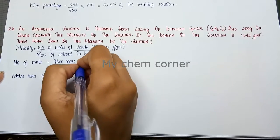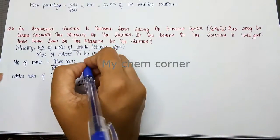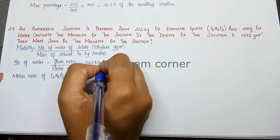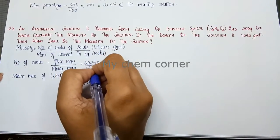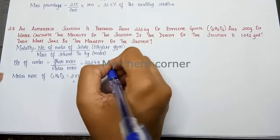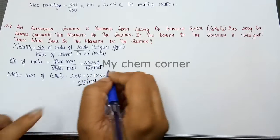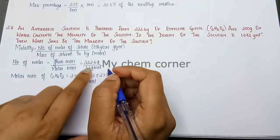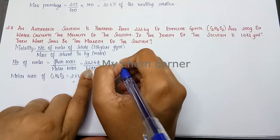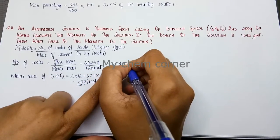Substituting into the moles formula: given mass is 222.6 grams divided by molar mass 62 grams per mole. Grams cancel and we get 3.59 moles of ethylene glycol.